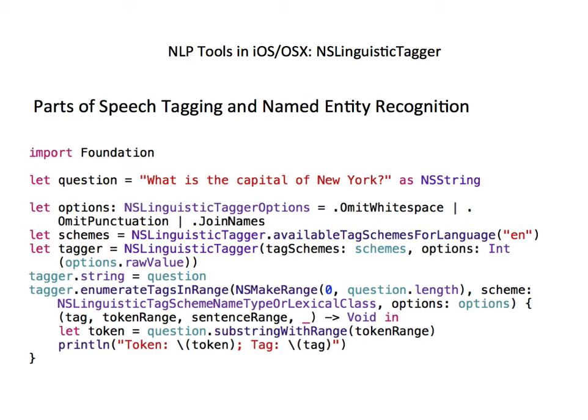Let's see how this works by analyzing a simple question: 'What is the capital of New York?' The first thing we do is specify what tokens we are interested in and how we want to treat those tokens using NSLinguisticTaggerOptions. We're not interested in whitespace and punctuation tokens, so we can specify omitWhitespace and omitPunctuation to do that.